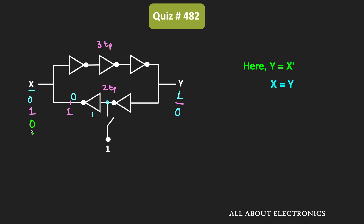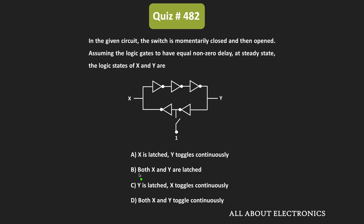This output passes through three gate delays again, and after three gate delays, the Y output will become 0. When this 0 passes through the two gate delays, the X output becomes 0. When X passes through three gate delays again, the Y output toggles and becomes 1 again. After closing the switch momentarily and opening it, the logic states of X and Y continuously toggle between 0 and 1. Therefore, for the given question, option D is the correct answer.